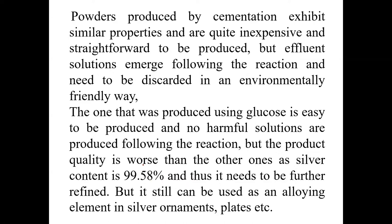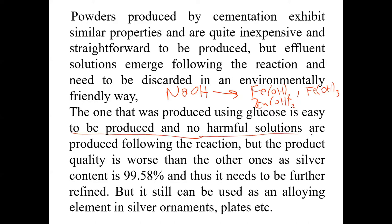This is very impressive. Sodium hydroxide can precipitate iron hydroxide if trivalent, and also zinc hydroxide can be precipitated using sodium hydroxide. The product produced using glucose is easy to make and no harmful byproducts are produced. However, the product quality is worse than the others as silver content is only 99.58%, so it needs further refining — but it still can be used as an alloying element in silver ornaments.